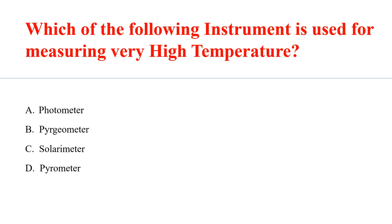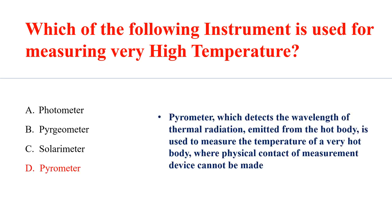A pyrometer is the instrument used for measuring very high temperatures. A pyrometer detects the wavelength of thermal radiation emitted from a hot body and is used to measure the temperature of a very hot body where physical contact of the measurement device cannot be made.